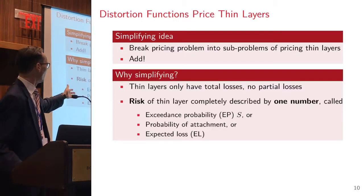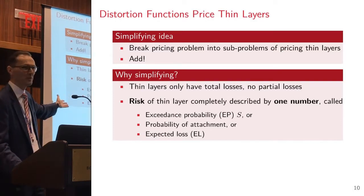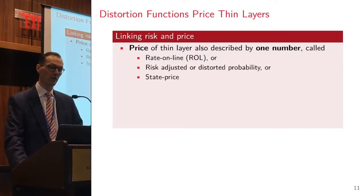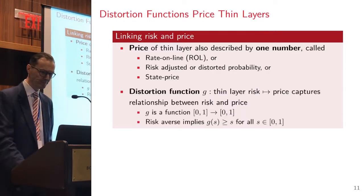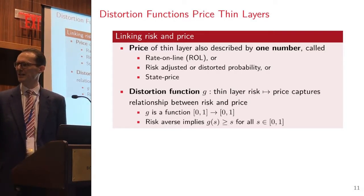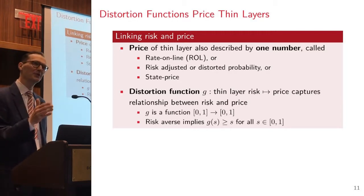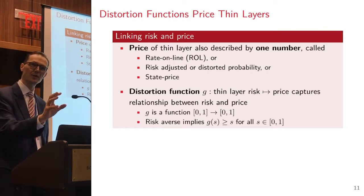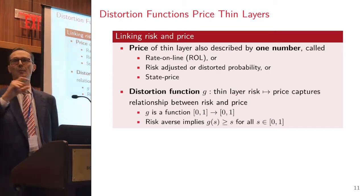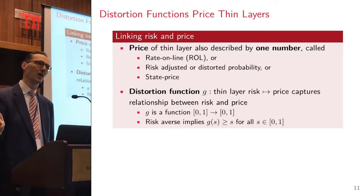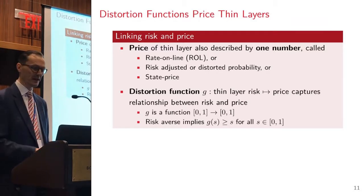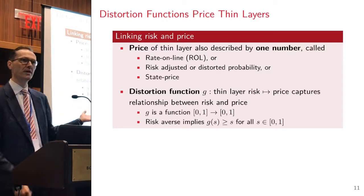What we're going to need is some way of taking that probability of attachment characterization of the risk and linking it to a price. I want to be able to price one dollar excess of anything and then I add up those prices and I can price any layer. We're going to call it the exceedance probability or probability of attachment or expected loss, which are all the same for a thin layer. It's going to have a price which we'll call the rate online or the risk adjusted or distorted probability.